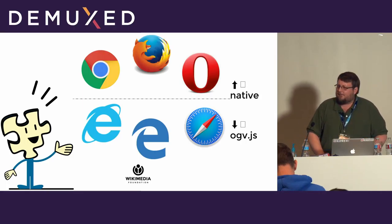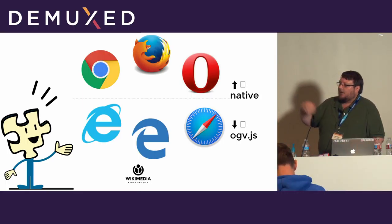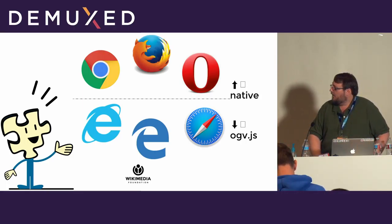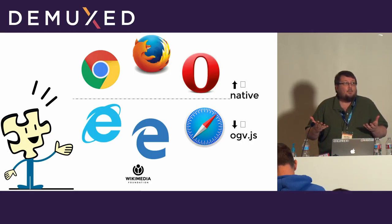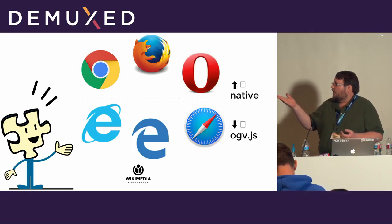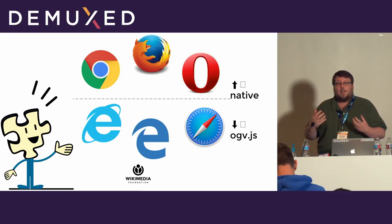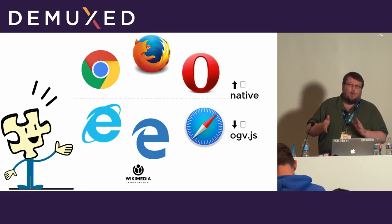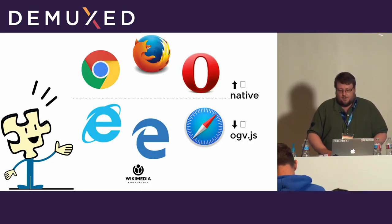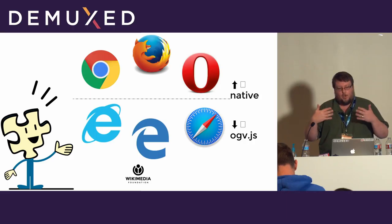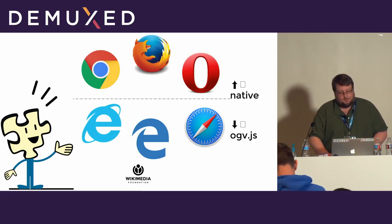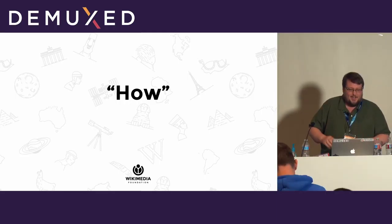This is definitely an improvement. If you're on Firefox, Chrome, or Opera, you get native playback — it's pretty awesome. If you're on Edge, Internet Explorer, or Safari, you get the JavaScript playback, and you probably don't really notice the difference. Unless, of course, it goes horribly slow or breaks, which sometimes happens. There are still bugs. So, how does it actually work?